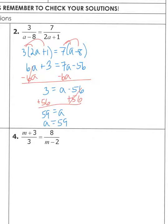Now check restrictions. Set each denominator equal to zero: a cannot equal eight (from a minus eight equals zero), and a cannot equal negative one half (from two a plus one equals zero, subtract one then divide by two). Since 59 is neither eight nor negative one half, it is a good solution. The check is left to you.